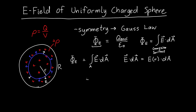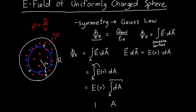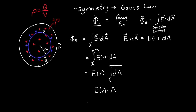Integrating E dot dA, which is E(r) times dA over the Gaussian surface: because we're integrating over a surface with constant r, we can pull E(r) out front. So this equals E(r) times the integral of dA, which is just the total surface area — equal to E(r) times 4π little r squared.